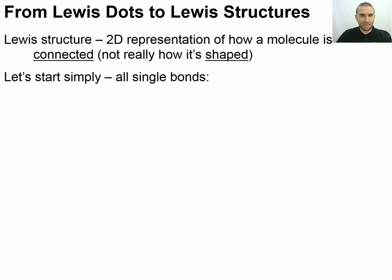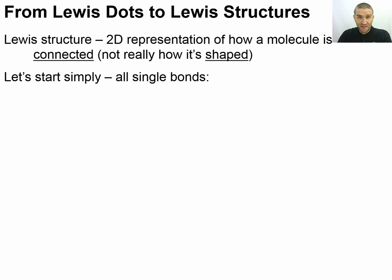We're going to start out simply when we draw these — assuming at the beginning that everything has single bonds. We'll work to a point where we say we can't move any further forward unless we consider multiple bonds, and that's when we'll start drawing in a double bond or triple bond.